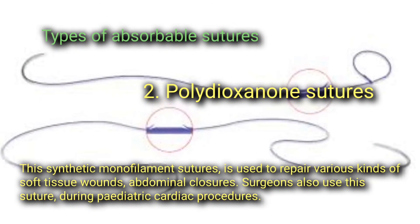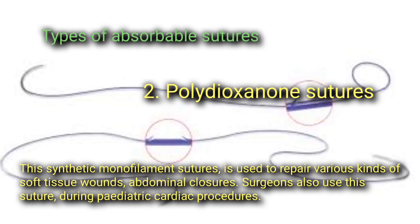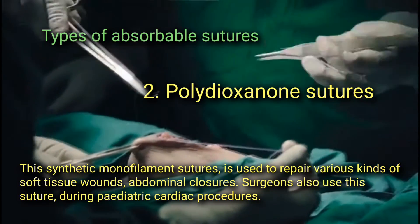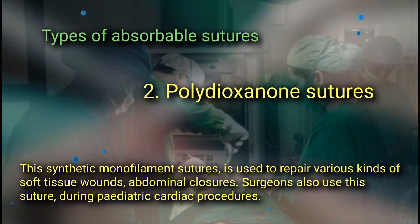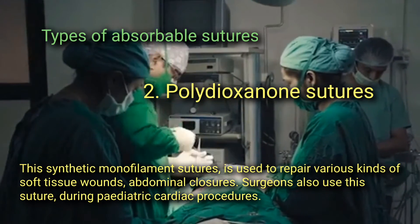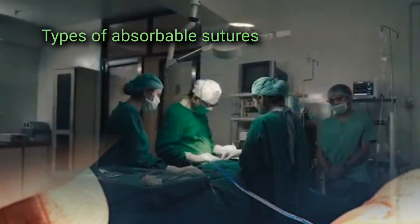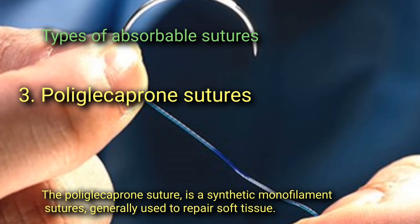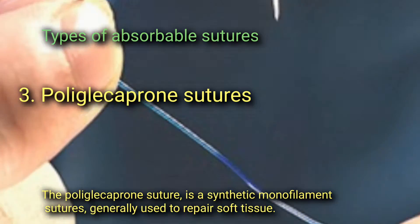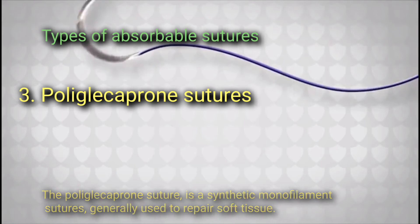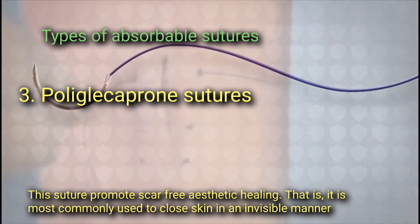Polydioxanone sutures are synthetic monofilament sutures used to repair various kinds of soft tissue wounds and abdominal closures. Surgeons also use these sutures during pediatric cardiac procedures. Polyglecaprone sutures are synthetic monofilament sutures generally used to repair soft tissue. They promote scar-free aesthetic healing and are most commonly used to close skin in an invisible manner.